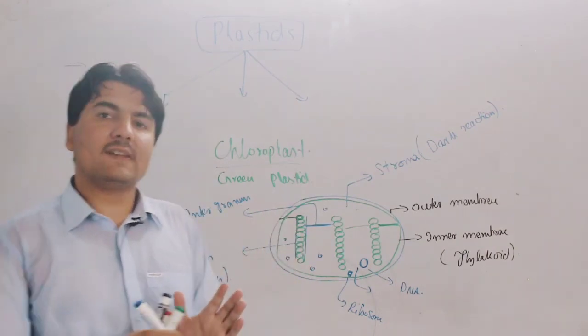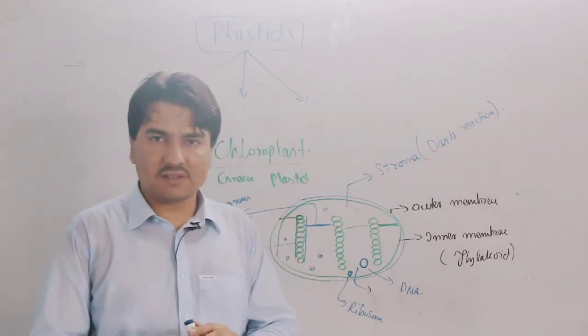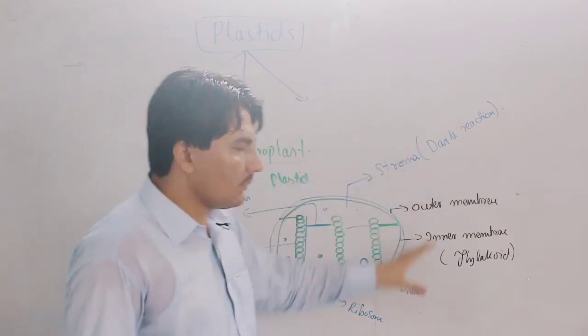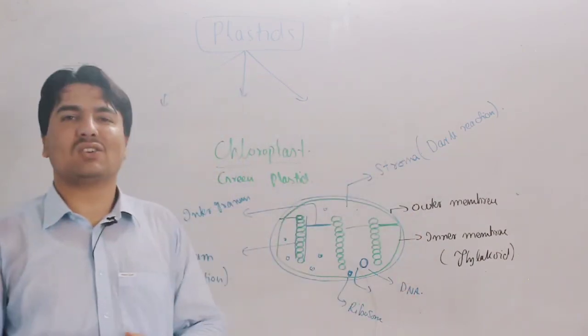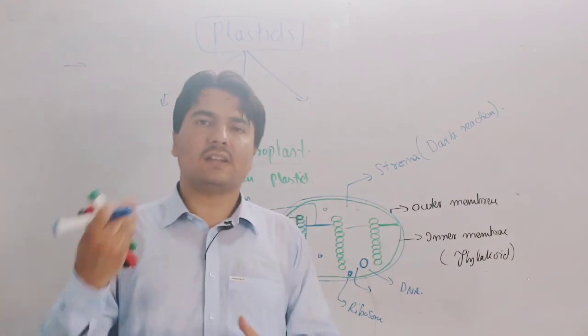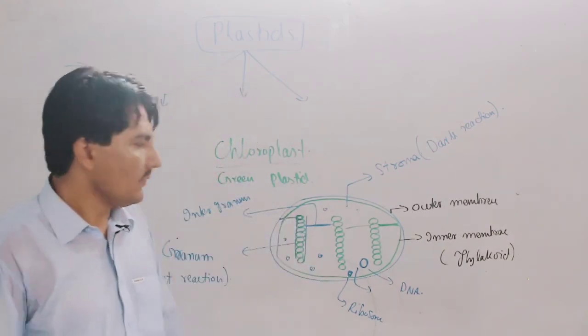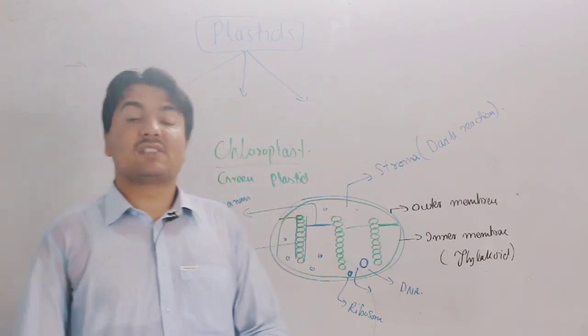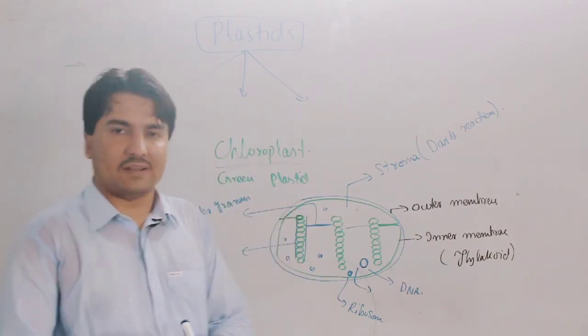Chloroplast is quite important. This is totally absent in animal cells, only found in plant cells. This plastid is a double membrane structure and is also an autonomous organelle because it has its own DNA and ribosomes. So this is all about the structure and function of chloroplast. Thank you.